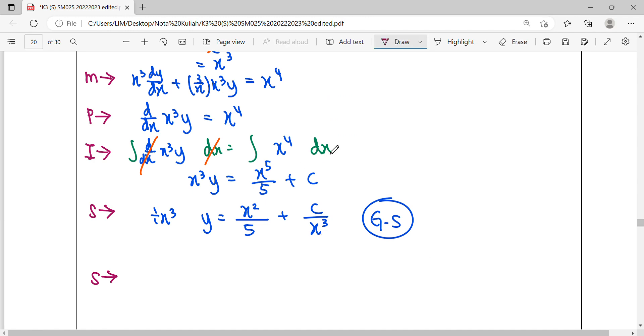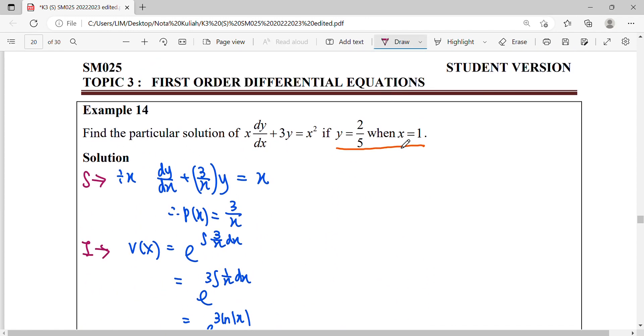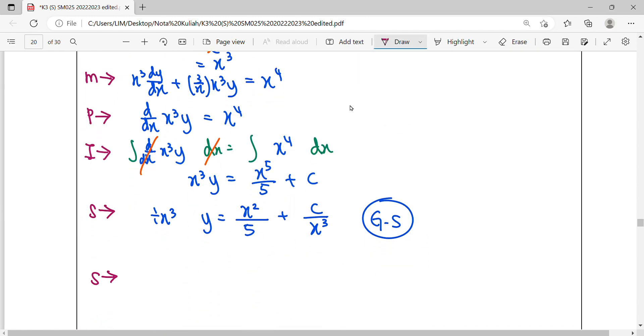We still have one more step. When x equals 1 and y equals 2/5, we're going to substitute these values to find the constant.